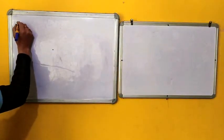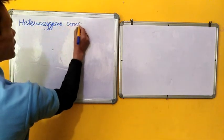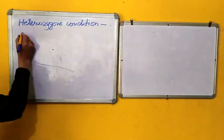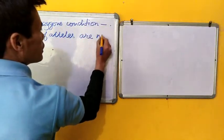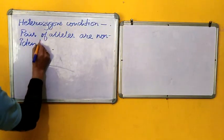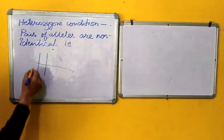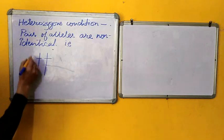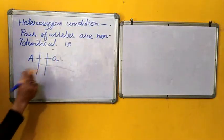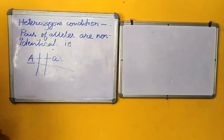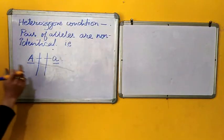Next, we come to the heterozygous condition. The pair of alleles are non-identical. That is, in a homologous chromosome, the two alleles that occupy the same loci are non-identical to one another. That is, this allele is not an identical form of this allele that controls a character.